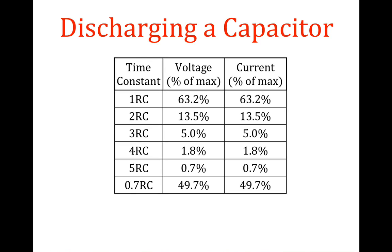We can write up a table: this column is for time constants one through five, and this column shows the voltage and current as a percentage of the initial maximum — you get the same values for both because they are both exponentially decaying curves. Sometimes we want to know when the voltage or current will be reduced by half — that would be after about 0.7 time constants. So that's the voltage and the current with respect to time for discharging a capacitor, and that's the time constant.